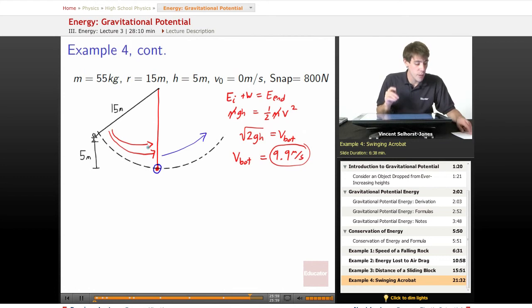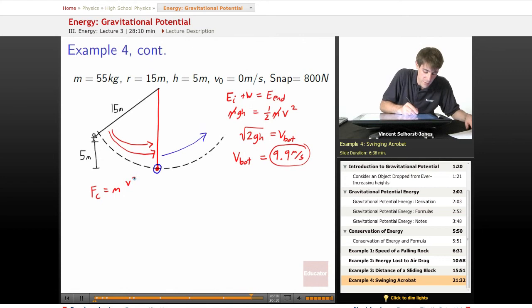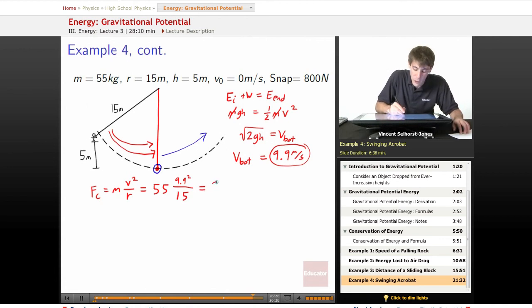We know that v bottom is equal to 9.9 meters per second. What's the centripetal force necessary to keep them in a circle? Force centripetal is equal to mass times the velocity squared divided by the radius. 55 kilograms times 9.9 squared over 15 meters. We plug that into a calculator, and we get 359 newtons is the necessary force, the necessary centripetal force, the necessary sum of forces to be able to keep him in that circle.